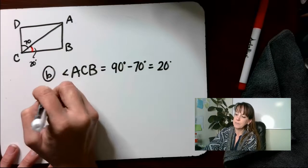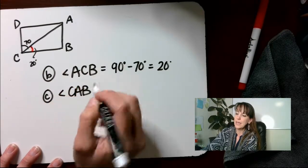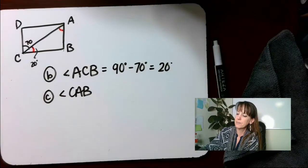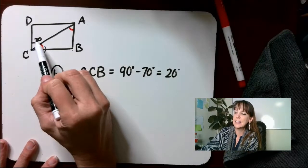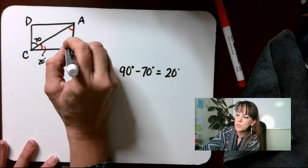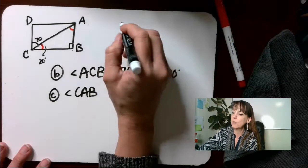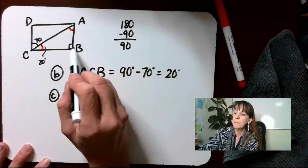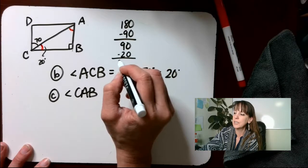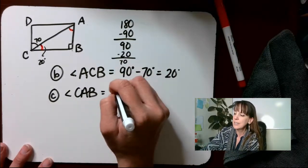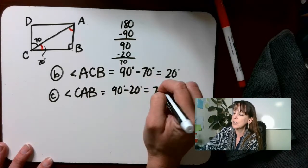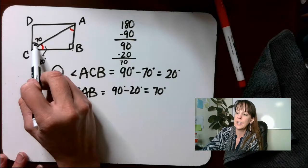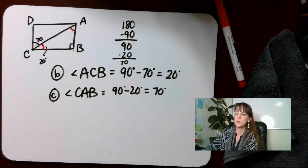For C: the measure of angle CAB. That's this angle over here. This angle is 70 degrees, and we assume the other side is 90 degrees. So in that triangle, 180 minus 90 minus 20 degrees means angle CAB equals 70 degrees. This is something you'll find in geometry — these alternate angles are congruent.